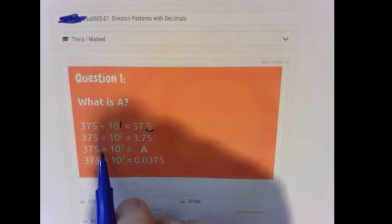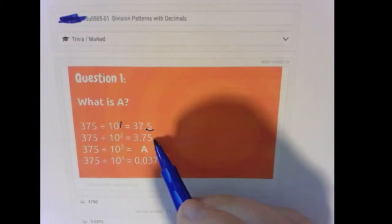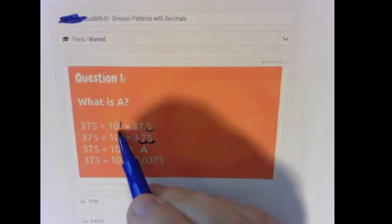We move the decimal one spot from 375 to become 37.5. Here, 375 divided by 10 squared, or 375 divided by 100, what are we doing? We're moving one, two spots.